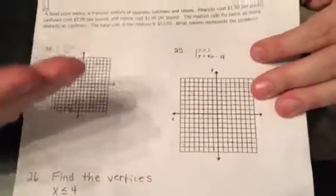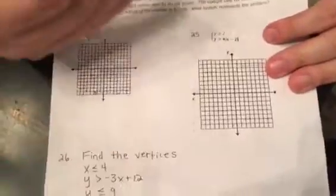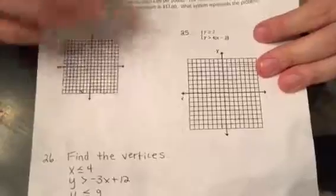Solving systems of inequalities like these, remember we're shading above, we're shading below, you have to have the overlap. So the overlap is probably all that's going to be shaded on those multiple choice answers for you to find.